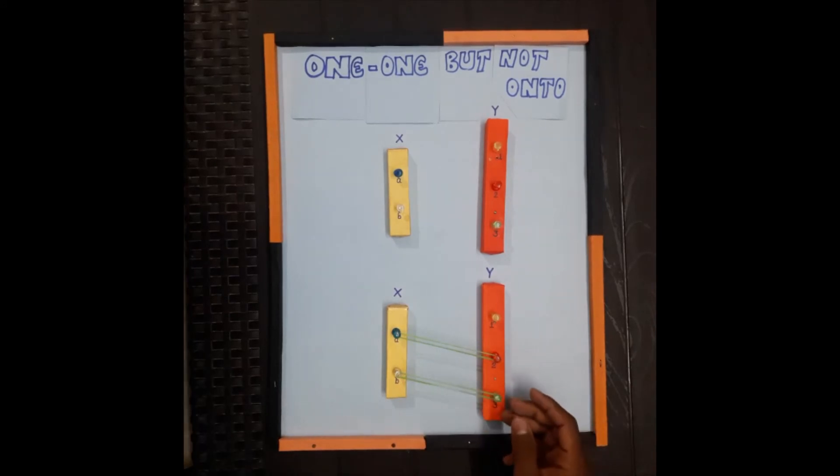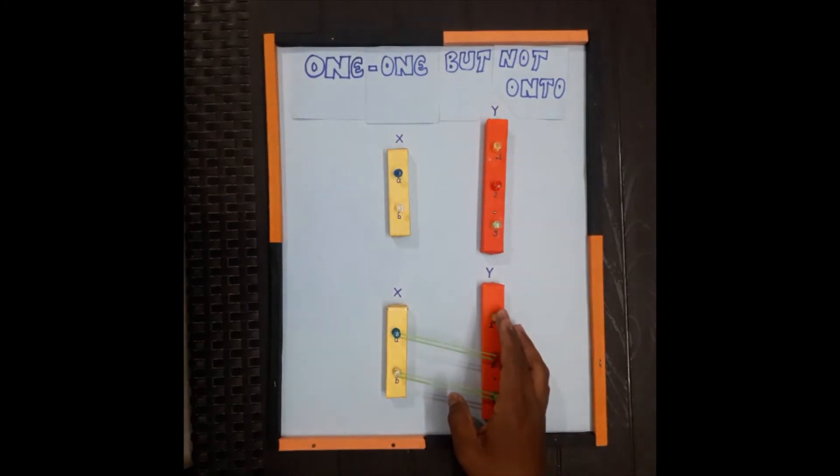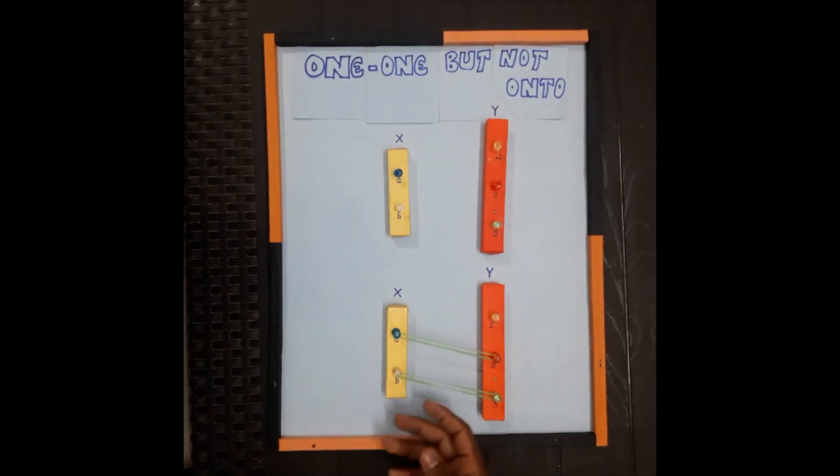So this function represents a one-one function, and every element in x has a unique image in y. The preimage of the element 1 of y does not exist.